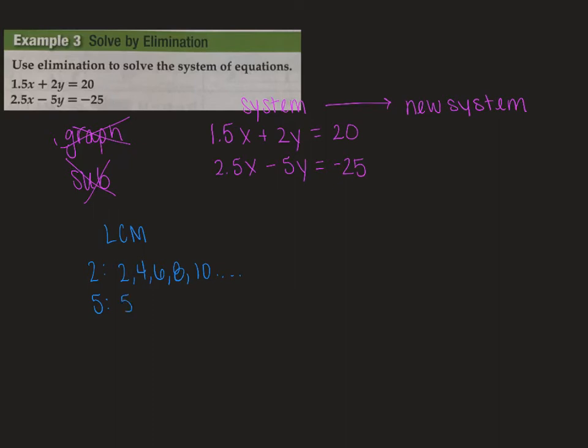For 5s, your multiples are 5, 10, 15, and so on. So you can see that the least multiple that they have in common will be 10. So we need to figure out how to get these to equal 10.